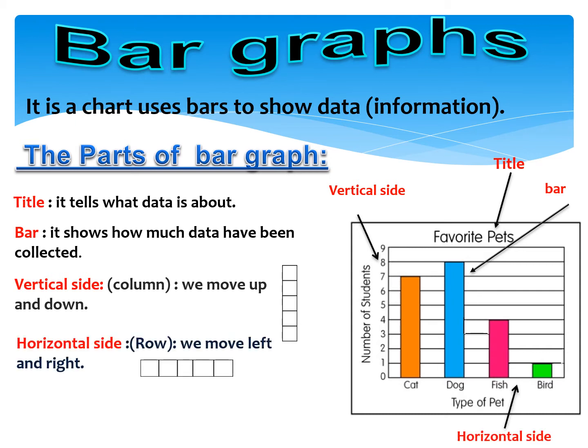The fourth part is the horizontal side. The horizontal side is like a row — we move left and right. Every bar graph has two sides, and each side has a label. Label means name also.